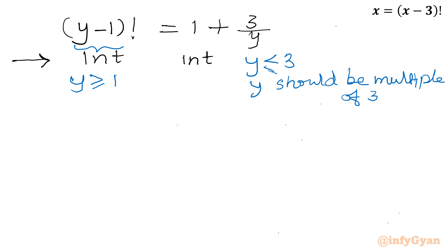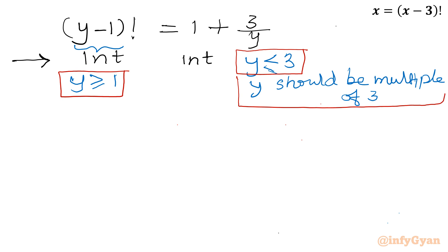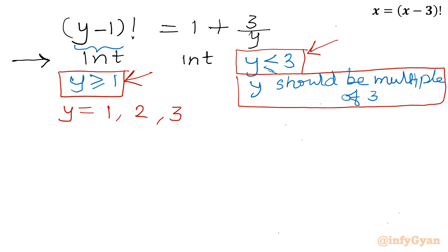Now I will combine and take the intersection of these three conditions. From condition one and three combined, y can be 1, 2, or 3. Applying the second condition that y must also be a multiple of 3, the value y = 2 is rejected. So only two values remain to check: y = 1 and y = 3.